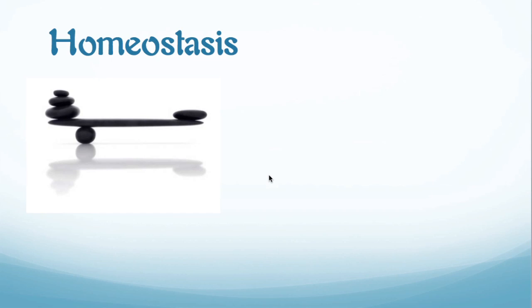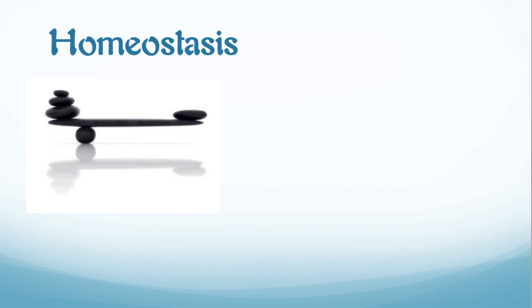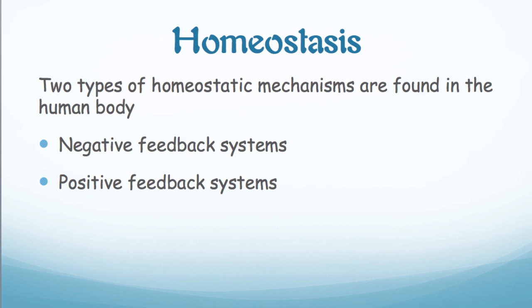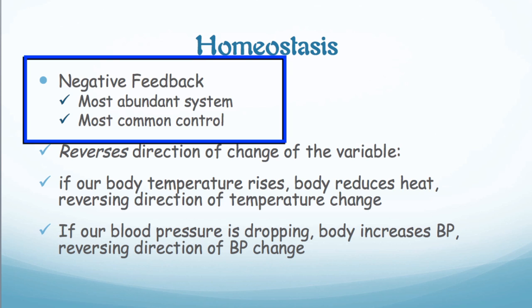Hello again everyone. We're here for homeostasis part two to talk about the difference between negative feedback systems and positive feedback systems. There are two different kinds of homeostatic mechanisms found in the human body: negative feedback systems and positive feedback systems. Negative feedback systems are our most abundant system — almost all of our homeostatic mechanisms work on a negative feedback system.